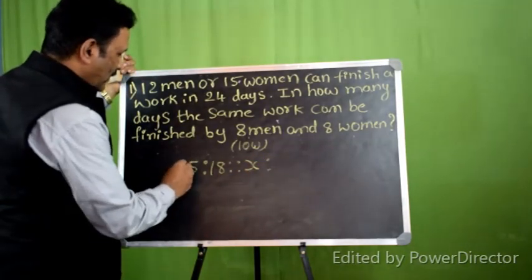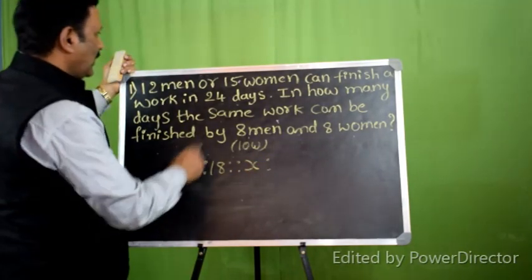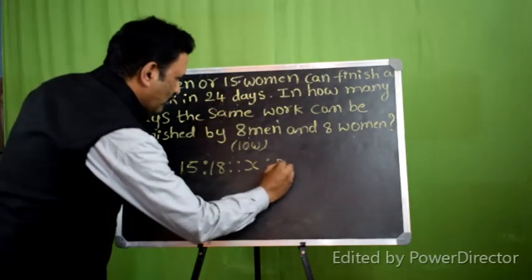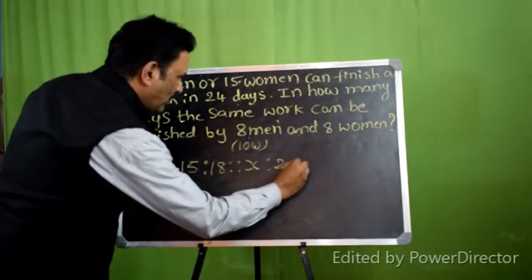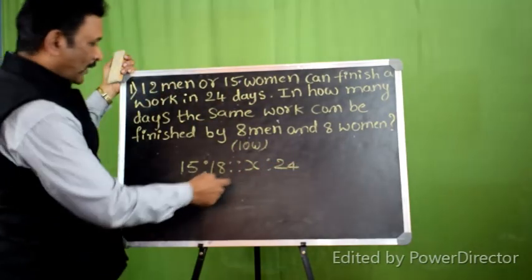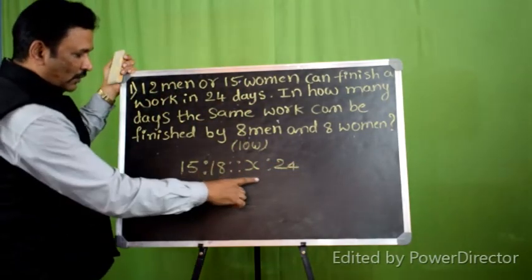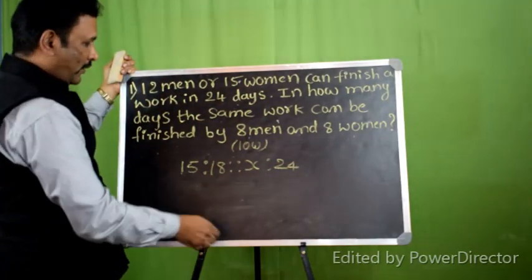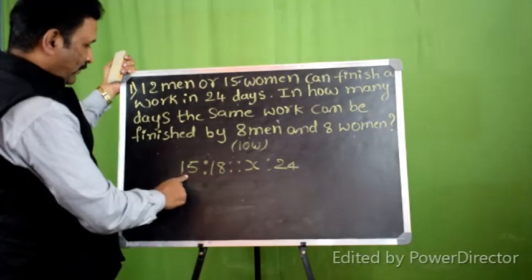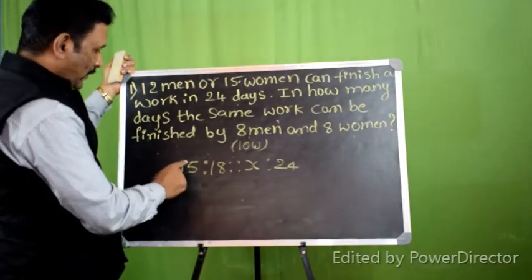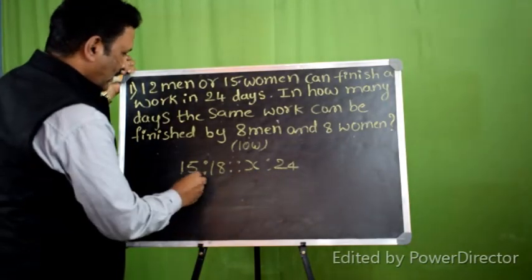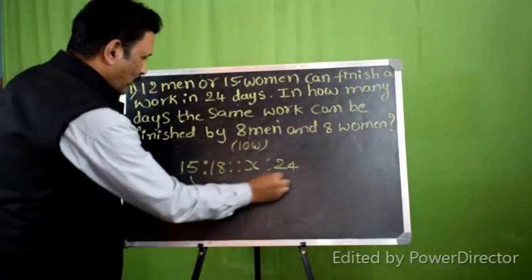15 women, 24 days — the total work is equal to 24. So, 15 men, 15 women, 24 days.